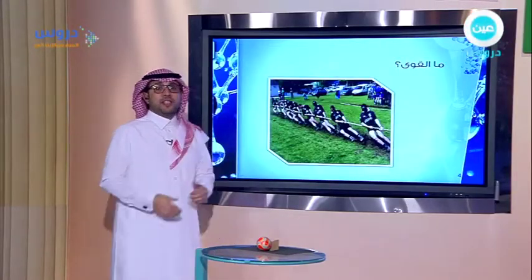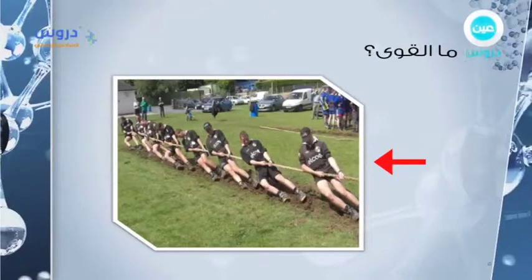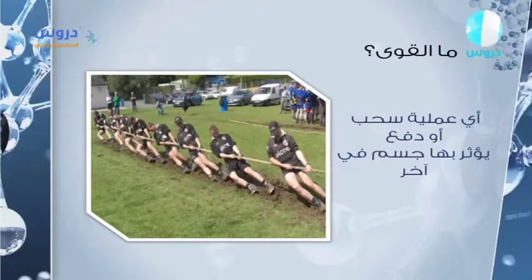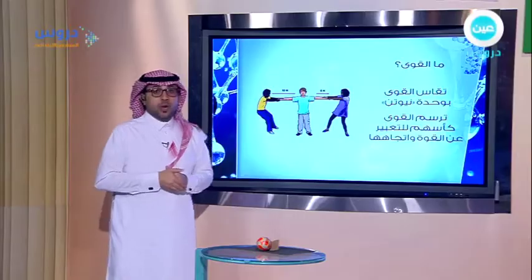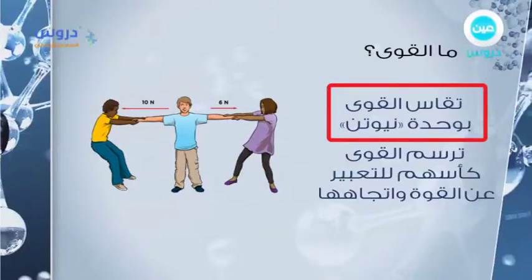ماذا نشاهد في هذه الصورة؟ ماذا يعمل هؤلاء المتسابقون؟ يشدون الحبل، كل متسابق يشد الحبل بيده بقوة. إذن ما هي القوة؟ هي عملية سحب أو دفع يؤثر بها جسم في جسم آخر. هذا المتسابق يؤثر بقوة في الحبل لكي يسحب الفريق الآخر. تقاس القوة بوحدة تسمى نيوتن، نسبة إلى العالم إسحاق نيوتن الذي اكتشف أنواعاً كثيرة من القوة.